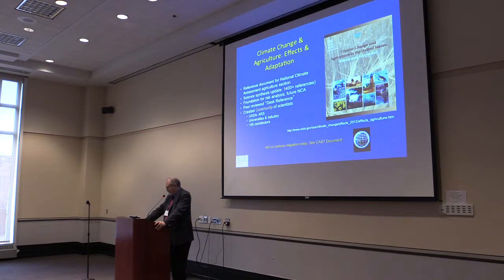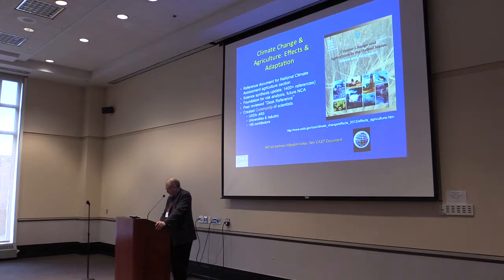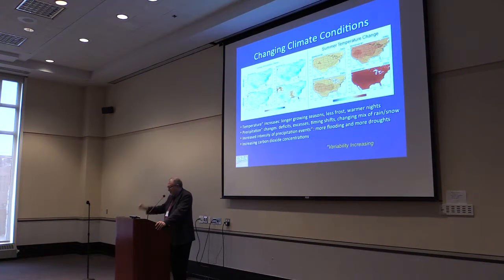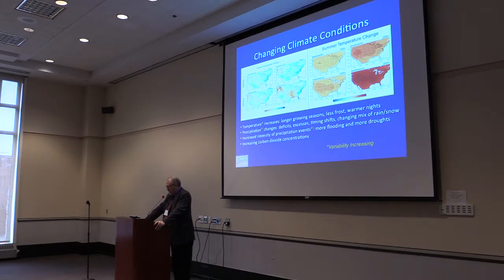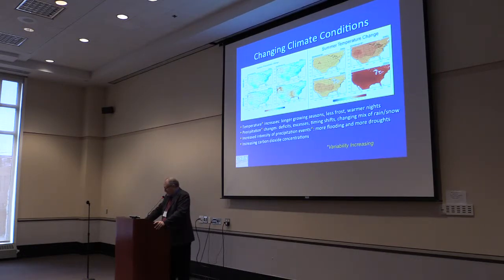At the bottom there's another document — that's the one we recommend for mitigation because we did not cover it in this report. So, what about changing climate conditions? This is a basic primer: we're talking about changes in temperature — gradual increases which lead to longer growing seasons, less frost, warmer nights. And wide swings of temperature over short periods of time, which we've all experienced in the last couple of years.